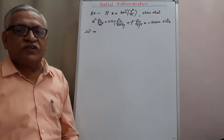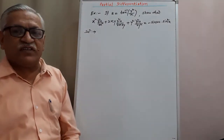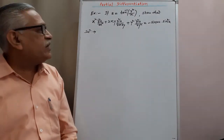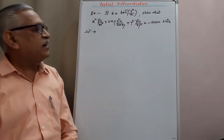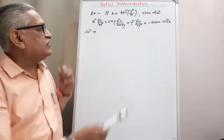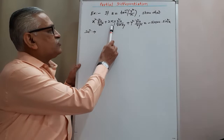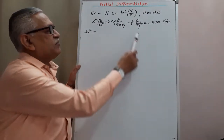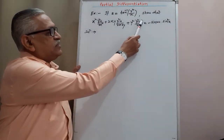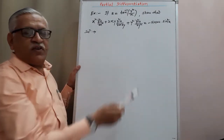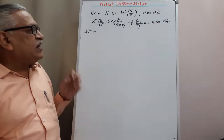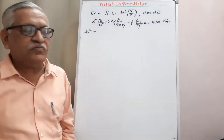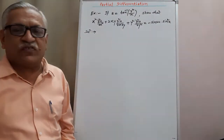If u is equal to tan inverse of y² divided by x, then show that x² ∂²u/∂x² + 2xy ∂²u/∂x∂y + y² ∂²u/∂y² is equal to minus sin(2u) · sin²(u).